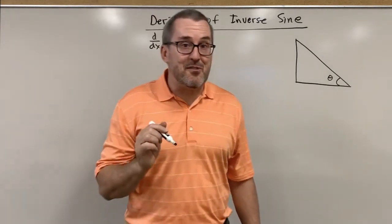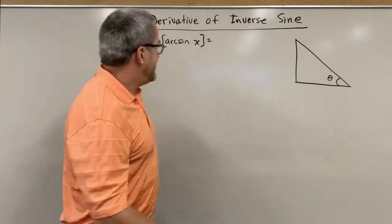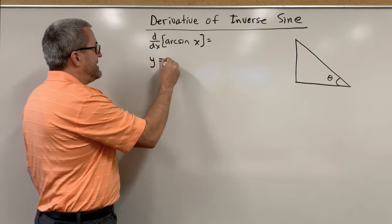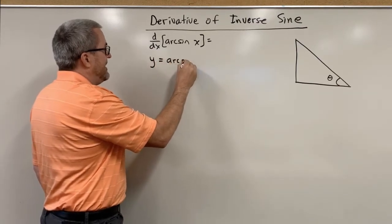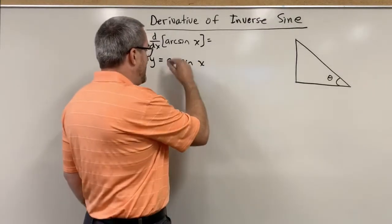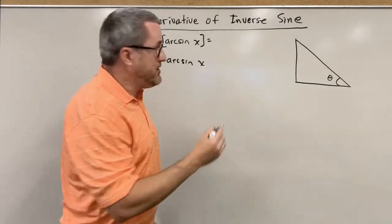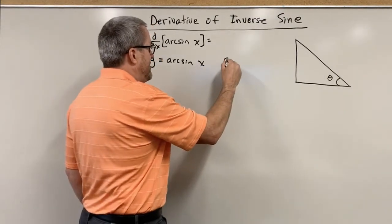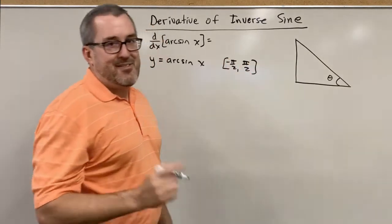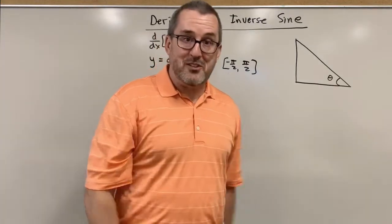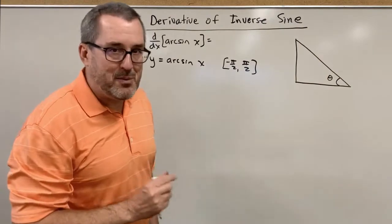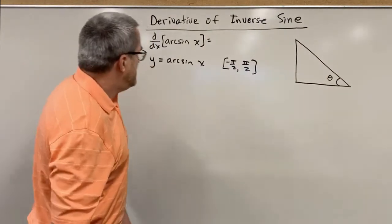We're going to use our implicit differentiation ideas. Let's start with that arc sine function. Let's create y as a function of x, the arc sine function. Now you may recall from your trigonometry that the arc sine function, to be a function, has to have a restricted domain. It can only live between negative pi over 2 and pi over 2. If that's not making sense to you, watch a video about that, to see why that's the case. But I want to be mathematically precise here and include that restriction.